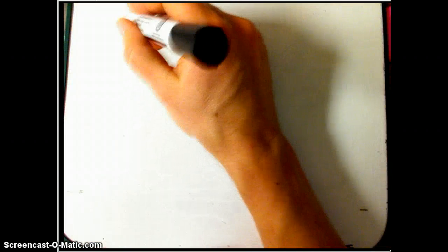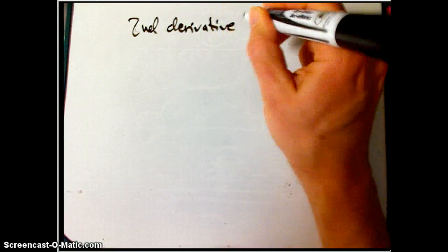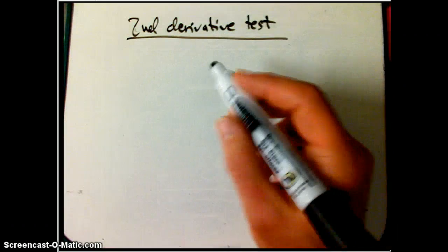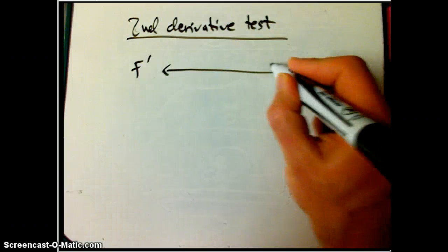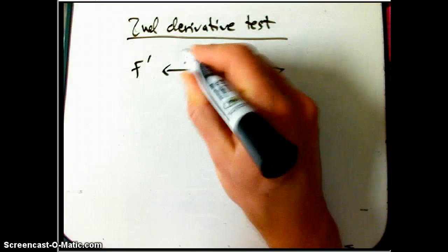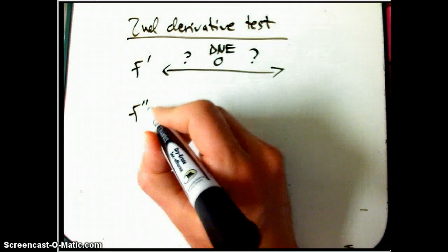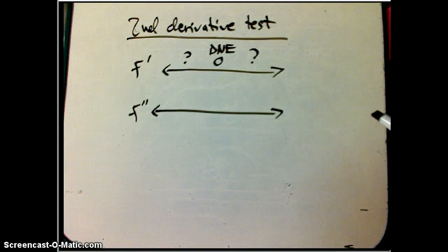What about the second derivative test? This is not as useful in our situations that we typically see, but it becomes really useful later on. So here you actually have some information about the first derivative, you have a zero or DNE. And let's suppose we don't have access to the signs on either side.